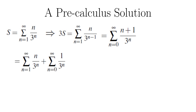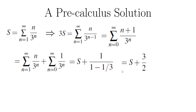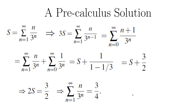We break up the sum on the right into two different sums: one is the sum of n over 3 to the power of n, and the other is the sum of 1 over 3 to the power of n. The first sum can start from n equals 1 to infinity because when n is 0, 0 over 3 to the power of 0 is just 0, so we can drop that term. This sum of n over 3 to the power of n is exactly s. The second sum is a geometric sum, which equals the first term divided by 1 minus the common ratio of 1/3, giving us s plus 3/2. So 3s equals s plus 3/2, which gives us the first sum.